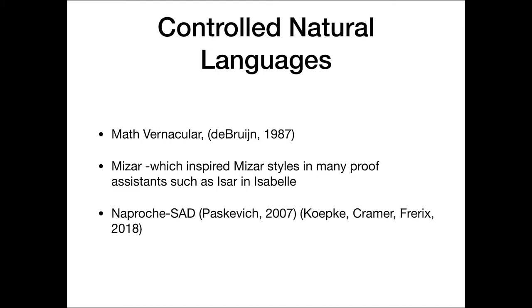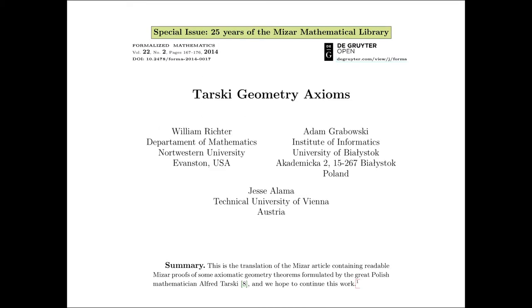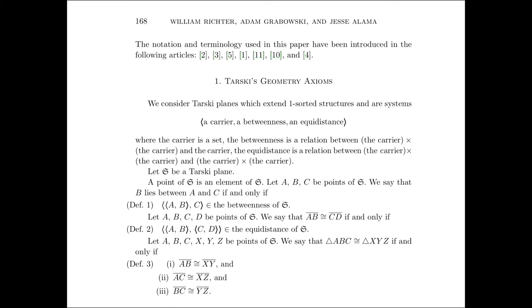So here is an example of an article in the Mizar system dealing with the Tarski geometry axioms from 2014. This is an ongoing project with articles in the most recent issue. So the Mizar system has a journal called Formalized Mathematics that publishes the abstracts of the formal proofs that are done in the Mizar system. So this is what it looks like. So it's fairly readable, at least compared to the other proof assistants that you'll see.